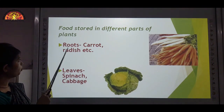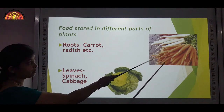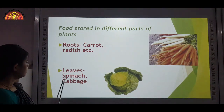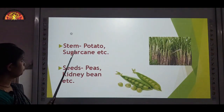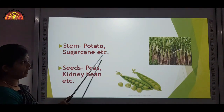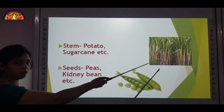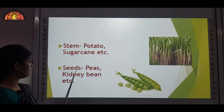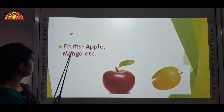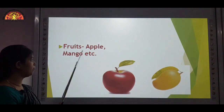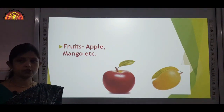In some plants, food is stored in roots like in case of carrot and radish — these are the roots that we eat. In some plants, it is stored in leaves like spinach, cabbage, etc. In some, it is stored in stem like in potato and sugarcane — this is the stem of the sugarcane which stores the food. In some plants, it is stored in seeds like peas, kidney beans, etc. And in some plants, the extra food is stored in fruits like apple, mango, and so many fruits which you like to eat.